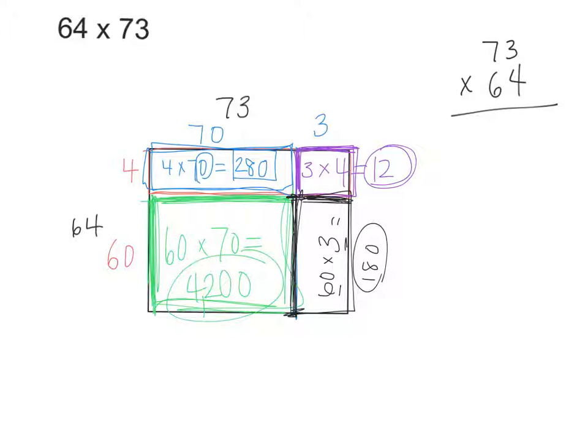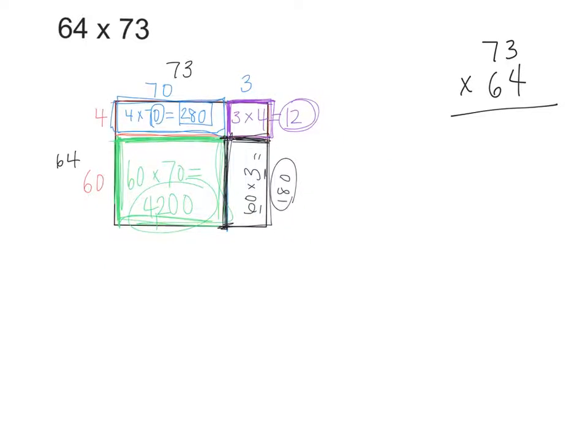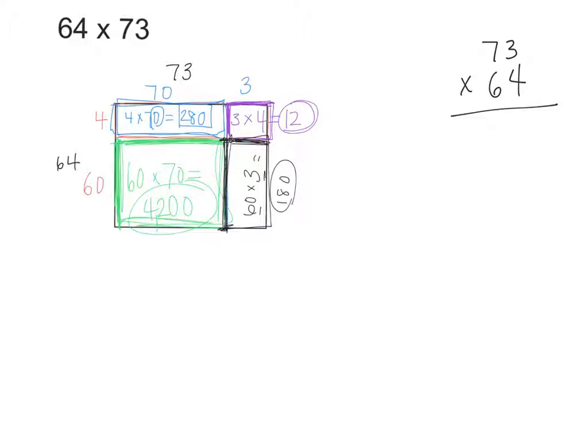So how many partial products do I have all together here? Four. So how can I find the entire area? Add them all up. We can add them all up. I like to start with the biggest one, 4,200, because that will help me line up the place values. So 4,200, then 280, 180, and 12. Go ahead and add those all up. In the ones place, 0 plus 0 plus 0 plus 2 equals 2. In the tens place, 0 plus 8 plus 8 plus 1 equals 17. I can regroup that 10 of those tens as 100. In the hundreds, I have 1 plus 2 plus 2 plus 1, which is 600. And in the thousands place, I have a 4. So the answer, then, to 64 times 73 is 4,672.